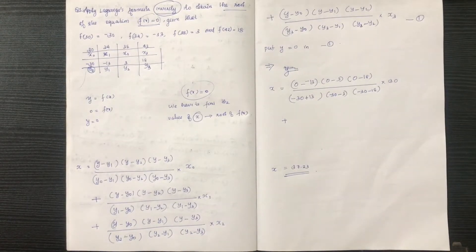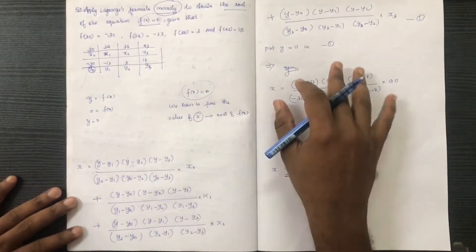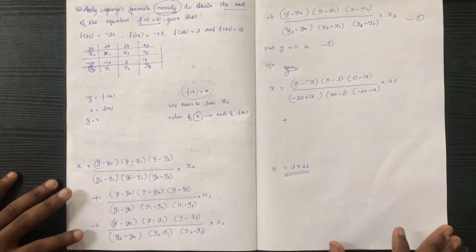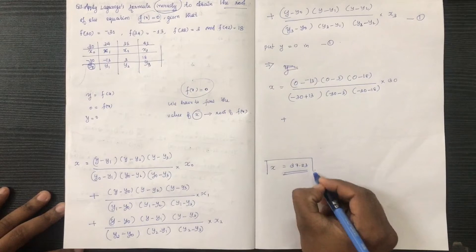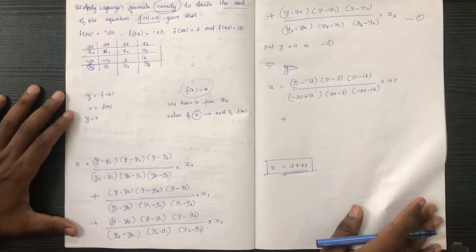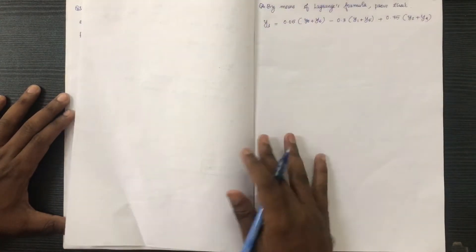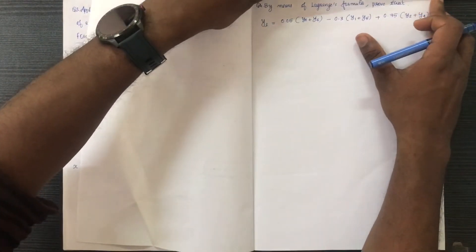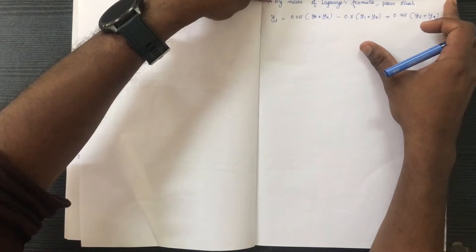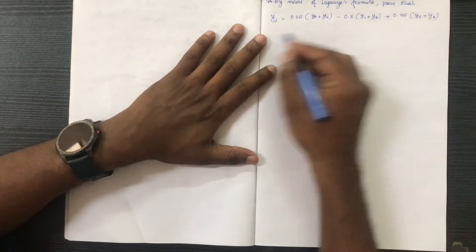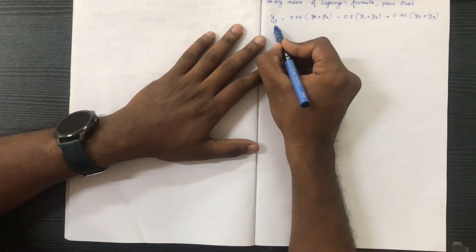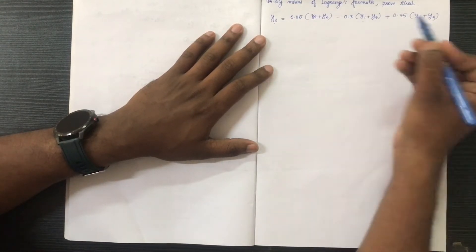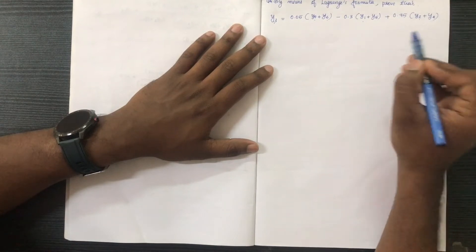This is the value from this problem. After completing this type of problem we move to another approach. Now we have another type of problem: using Lagrange's formula, prove the given relation. The first data values are Y0, Y1, Y2, Y3, Y4, Y5, Y6, where Y3 is equal to 2.